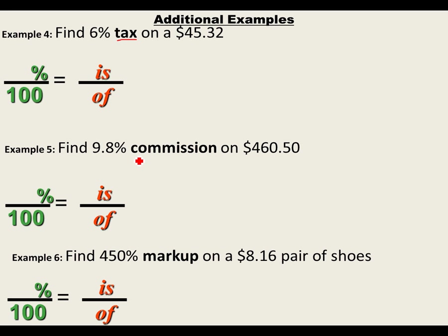Tax is added on. A commission is also something added to your total — it's a fee you receive for a service, like selling a house or an item at a store. Stores give you commission as a kind of bonus. Markup is similar to tax in that it's added on to the price. Go ahead and find these on your own, and then I'll show you the answers.